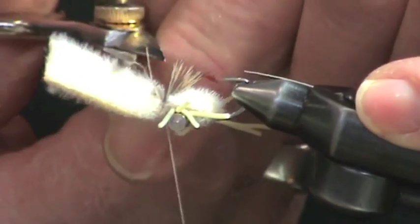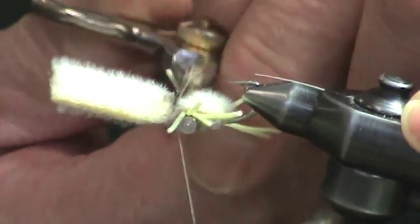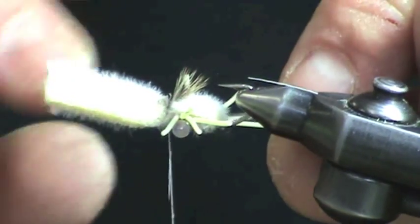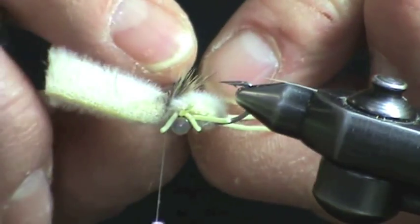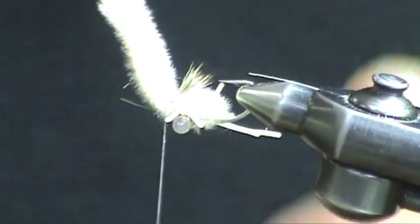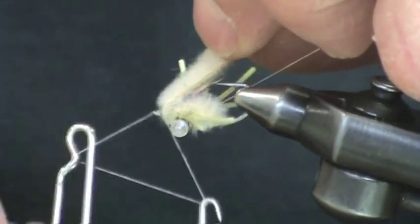Just like that. Not only will it give a mottled look, but it also acts as a weed or coral guard, which is important when you're fishing bonefish or permit in weedy areas, turtle grass areas, and that sort of thing. Now go forward to the eye of the hook and whip finish.